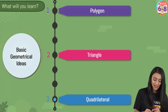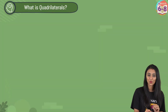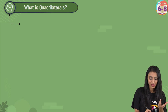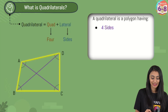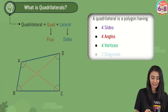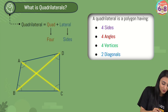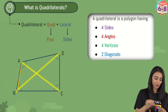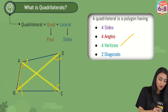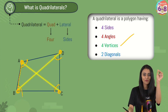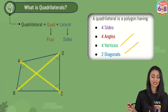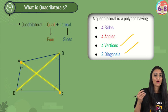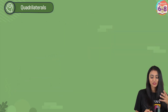Now let's move ahead and look at quadrilaterals. The word 'quad' means four and 'lateral' means sides, so a quadrilateral is basically a polygon having four sides, four angles, four vertices, and two diagonals. AB, BC, CD, and DA are the four sides. The diagonals AC and BD join the non-consecutive vertices.